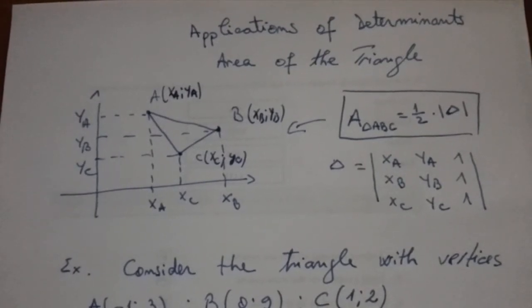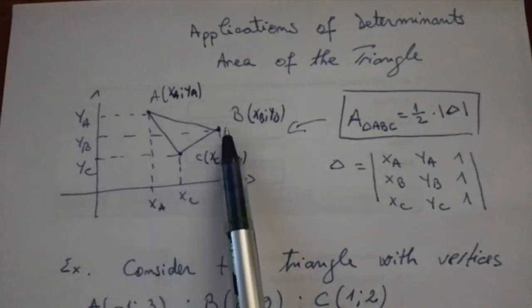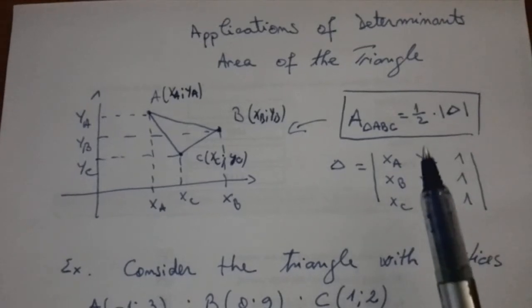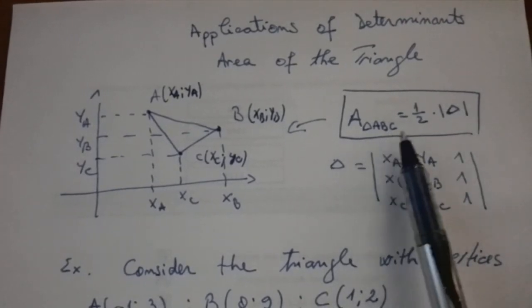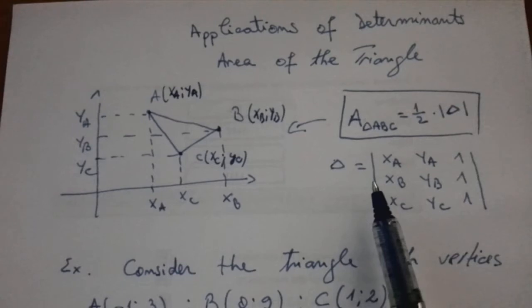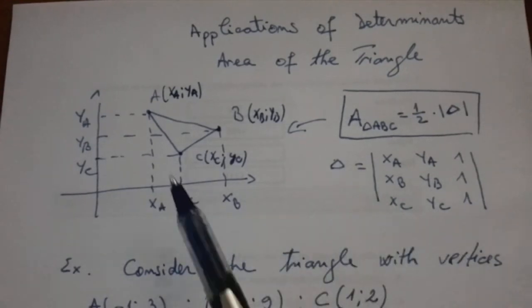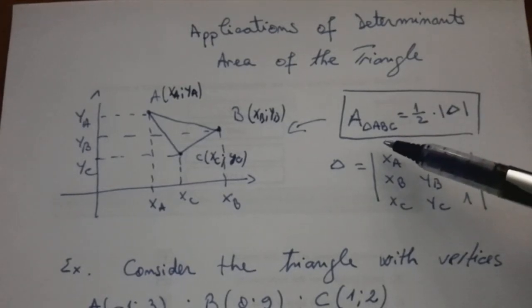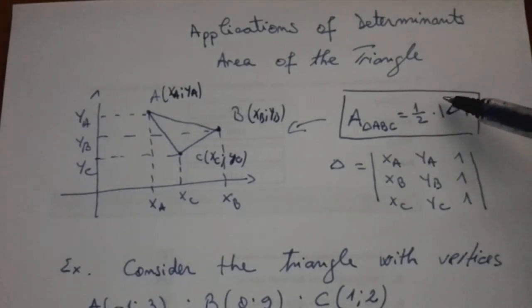I will present in this video area of a triangle when you know the coordinates of the triangle vertices. This is the formula: calculate the area where Delta is the determinant formed by the three points plus a column with one. This area must be positive, so we must put the modulus or absolute number of this.